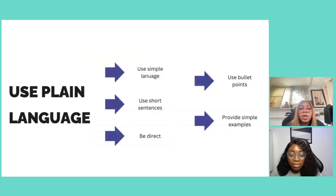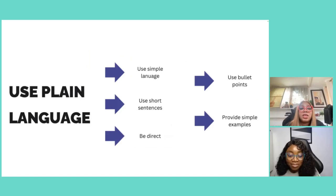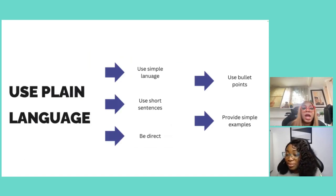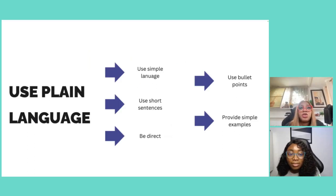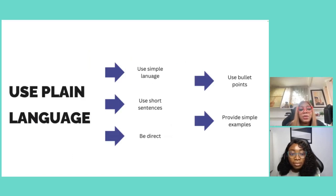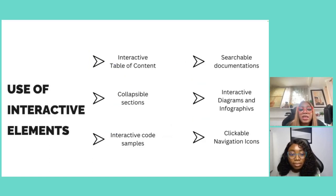Use plain, simple language. Some people think technical writing means using complex grammar, but tech is already complex and we need to break down those terms in a way everyone can understand. Use simple sentences, be direct, provide examples and illustrations, use cases, bullet points — use things people can relate to in order to explain what you're trying to say. Make it as clear, simple, and concise as possible.